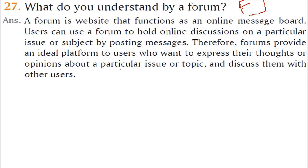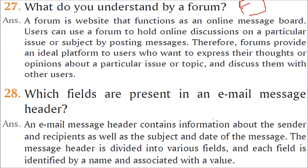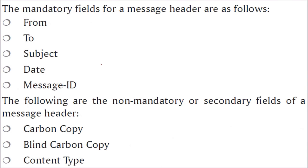Which fields are present in an email message header? The email message header contains information about the sender and recipient - who is sending, to whom. Then we have subject, date of the message. Subject means short idea about the email, then the date. The message header is divided into different fields, and each field is identified by a name. The mandatory fields are: from, to, subject, date, and message ID. There are certain non-mandatory secondary fields: carbon copy, blind carbon copy, and content type.